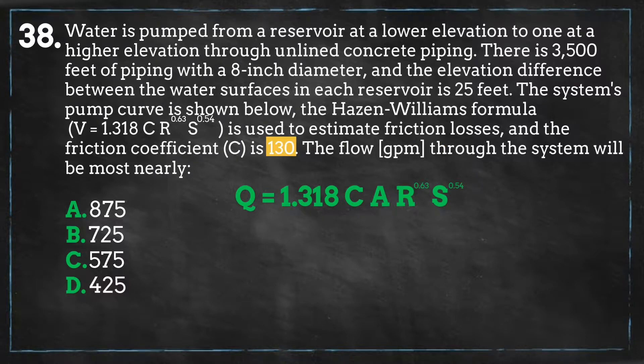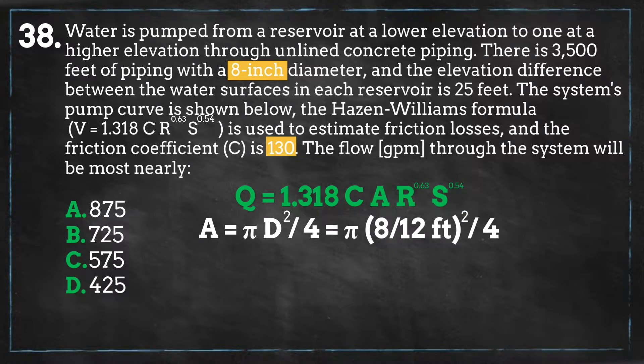So we have C, which is 130. The diameter of the pipe is 8 inches, so we can calculate the cross-sectional area, which equals 0.35 square feet.